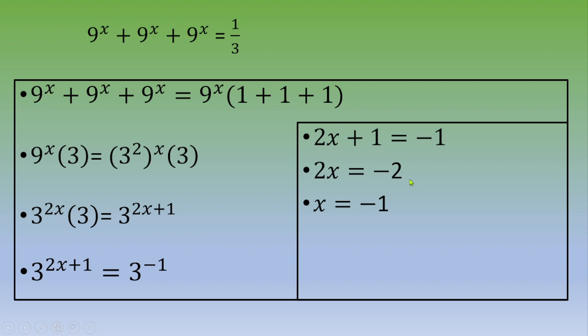Just to check, if you plug -1 into the original equation, you get 9^(-1) + 9^(-1) + 9^(-1). This is 1/9 + 1/9 + 1/9 = 3/9, and if you simplify, this is 1/3.